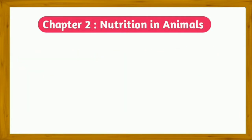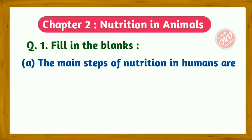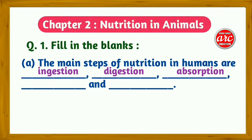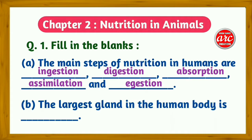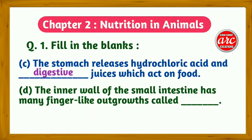Question 1: Fill in the blanks. (a) The main steps of nutrition in humans are ingestion, digestion, absorption, assimilation, and egestion. (b) The largest gland in the human body is the liver. (c) The stomach releases hydrochloric acid and digestive juices which act on food.